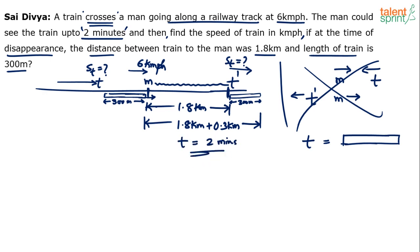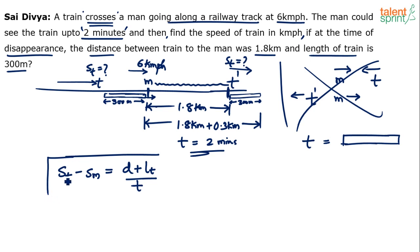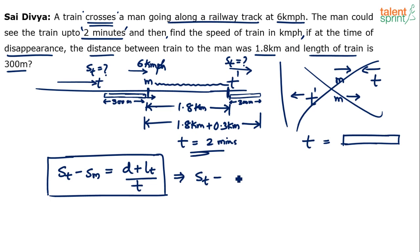Now it's a relative speed calculation. Since both bodies are moving in the same direction, relative speed equals speed of the train minus speed of the man. This equals the total distance traveled divided by the time taken. Speed of the train is unknown; speed of the man is 6 kilometers per hour.